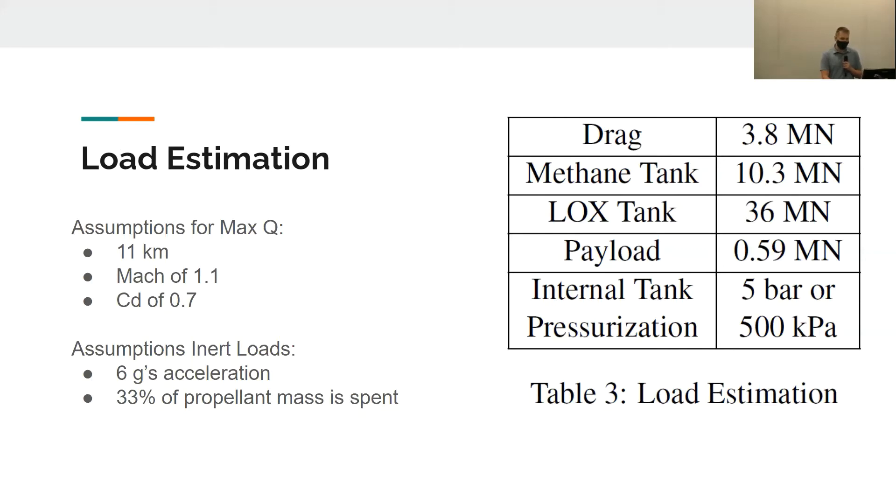By this time in the flight, we've used about 33% of the propellant, so we're going to estimate that the mass of the propellant in the tanks is 66% and then apply the 6g acceleration. The payload is also going to get the 6g acceleration and it was about 10 metric tons. The internal tank pressure of each tank is around 5 bar, which is traditionally higher than most rockets.